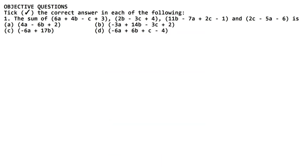Now, in this question, tick the correct answer in each of the following. In the first question, we have to take the sum of: 6a plus 4b minus c plus 3; 2b minus 3c plus 4; 11b minus 7a plus 2c minus 1; and 2c minus 5a minus 6.